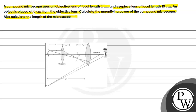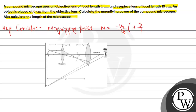To answer this question, we will discuss the key concept. The key concept here is magnifying power of a compound microscope. When we talk about magnifying power, it denotes how many times we have increased the image in comparison. The magnifying power of the compound microscope is given as M equals minus V0 divided by U0 into 1 plus D divided by Fe. Here, V0 and U0 are the distance of image and distance of object from the objective lens. D is the distinct distance and Fe is the focal length of the eye lens.